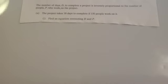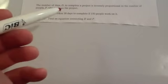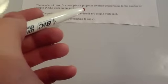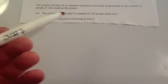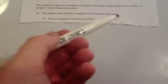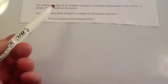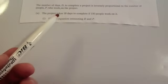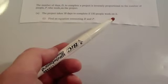The last example is a bit of a wordy question. It says, the number of days, D, to complete a project is inversely proportional to the number of people who work on the project. Well, that makes sense. As more people work on the project, it'll take less time to complete. The project takes 18 days to complete if 150 people work on it.